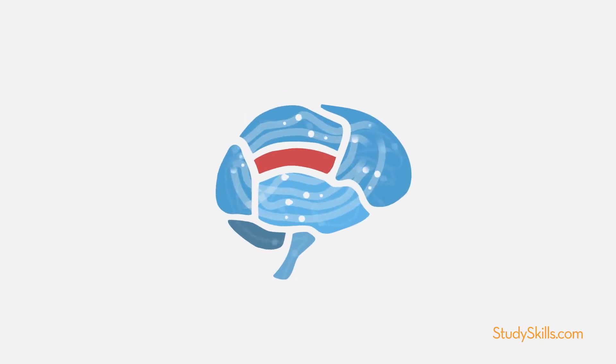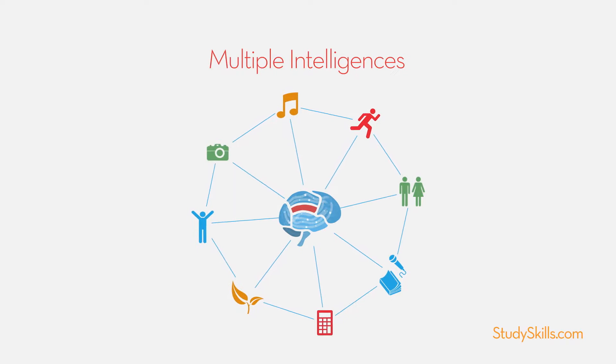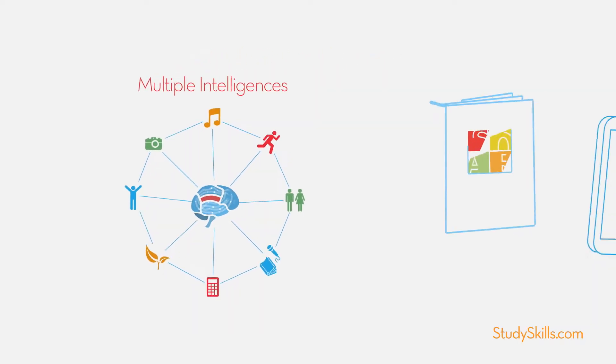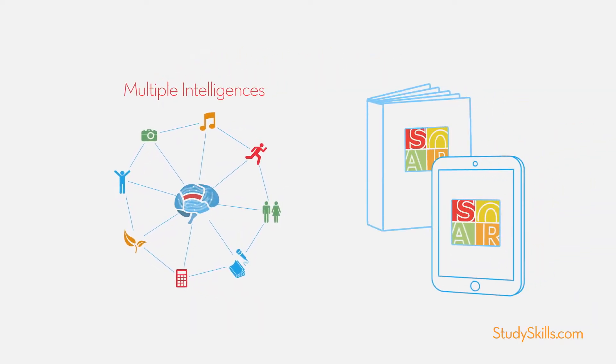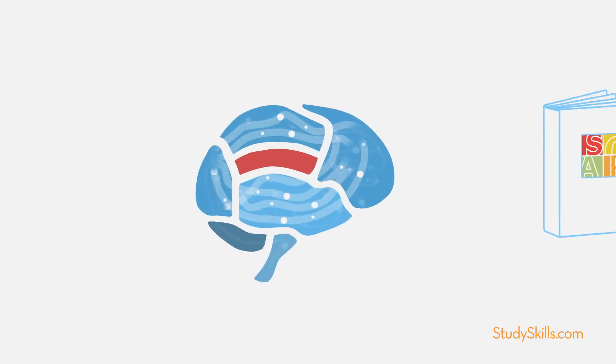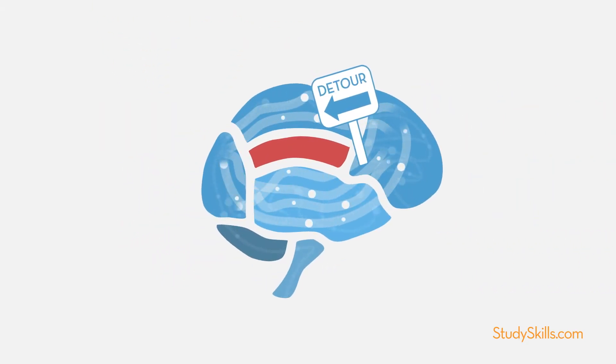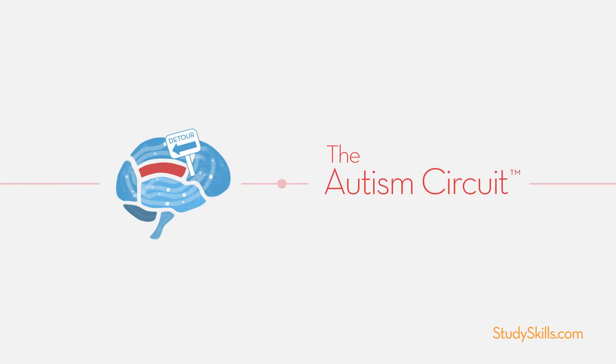Students build these detours by identifying their strengths and building learning connections as taught in the SOAR Learning and Soft Skills System. With effective detours, students with autism can discover success. This is the Autism Circuit.